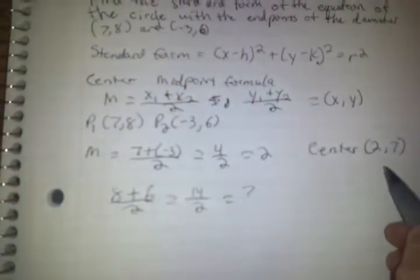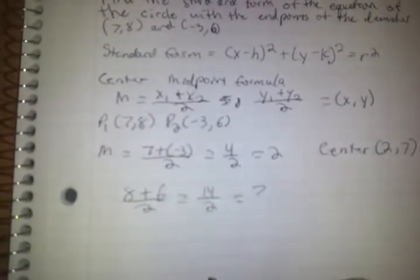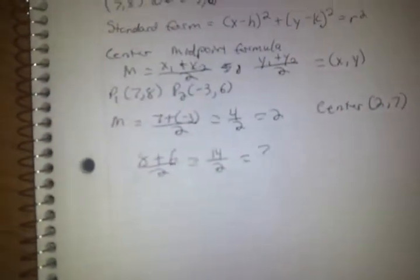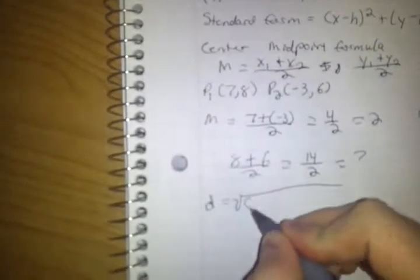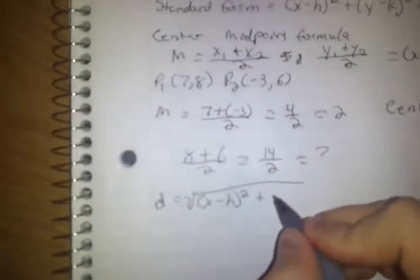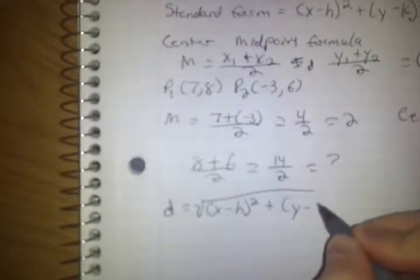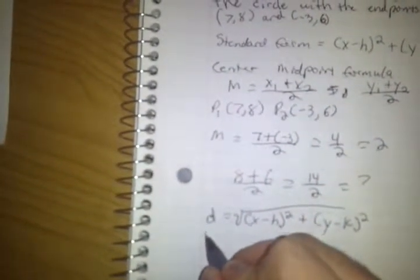Now that we have our center and point 1, we are going to find our distance or radius. Our distance is the square root of (x - h)² + (y - k)², and this is actually the distance from our radius.